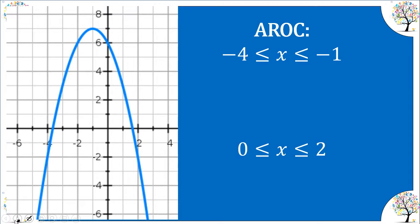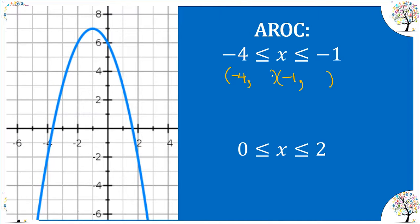They will always give you an interval, and you will be given x1 and x2. When we're finding average rate of change, we just need two points. We've been given the x-coordinates of both points. So on our graph, when x is negative 4, our output is going to be negative 2. That's one ordered pair.